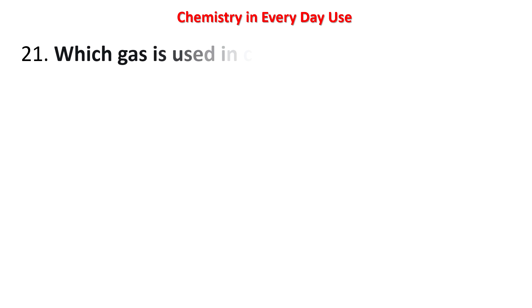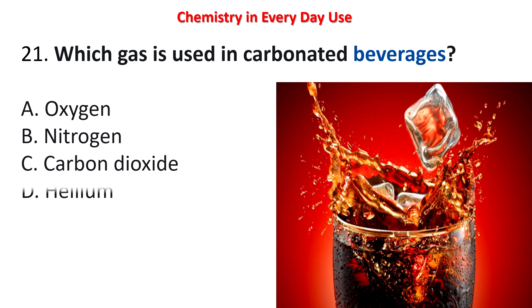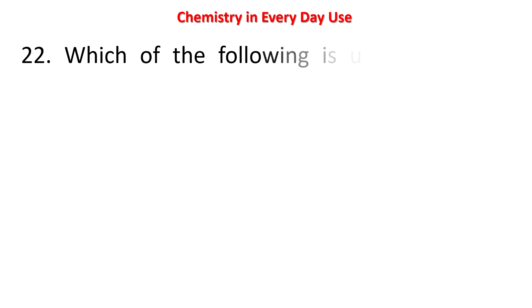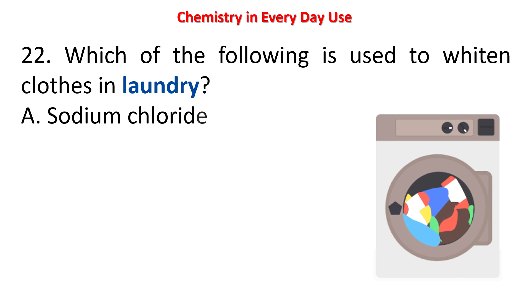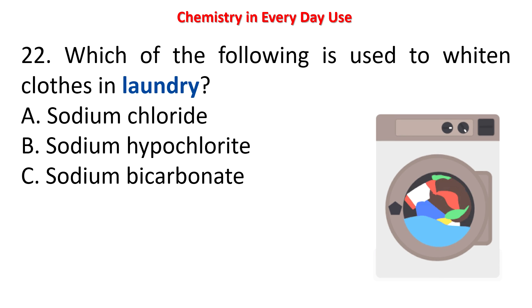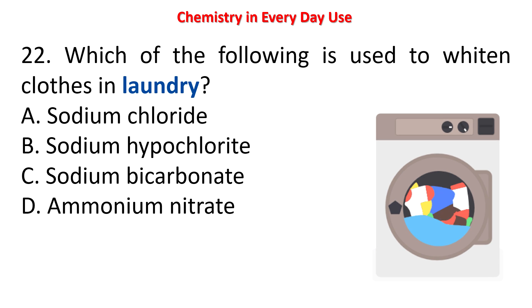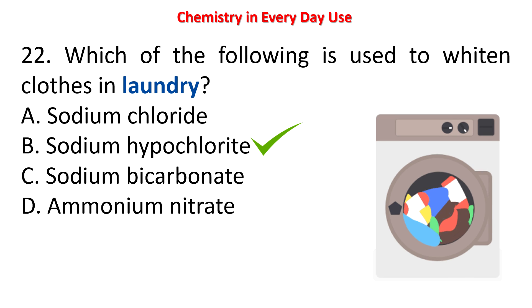Next question: which gas is used in carbonated beverages? Options: oxygen, nitrogen, carbon dioxide, helium. The answer is carbon dioxide. Next question: which of the following is used to whiten clothes in laundry? Options: sodium chloride, sodium hypochlorite, sodium bicarbonate, ammonium nitrate. The answer is sodium hypochlorite — it is used to whiten clothes in the laundry.